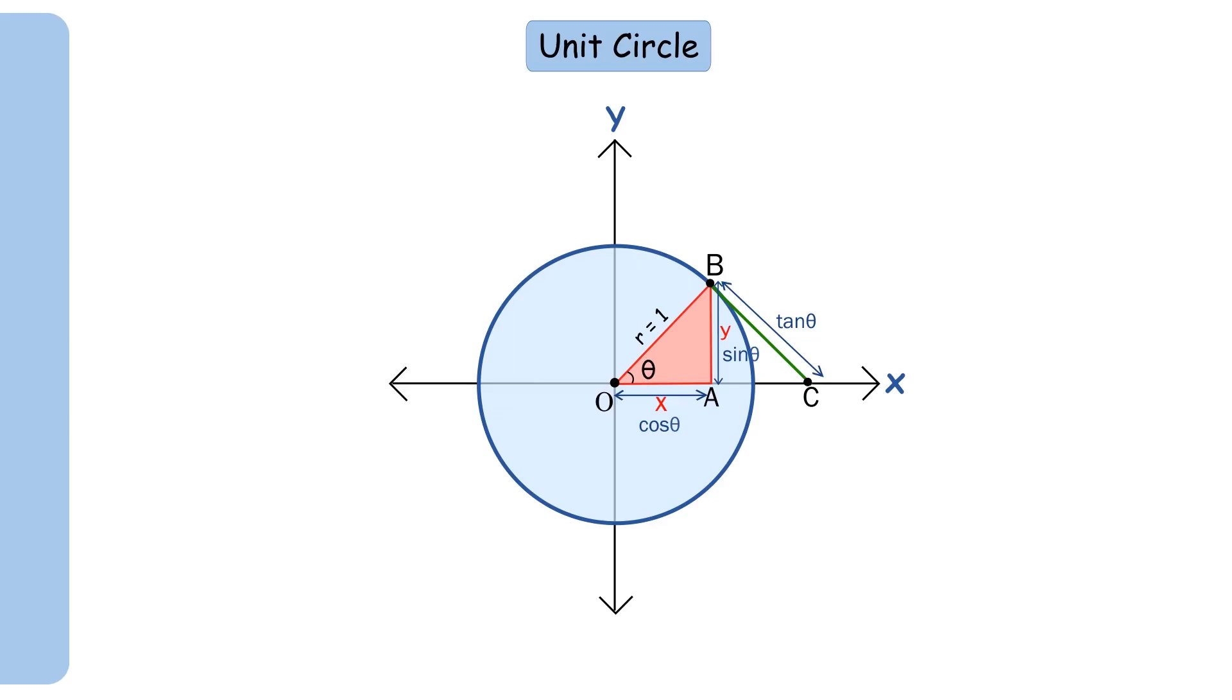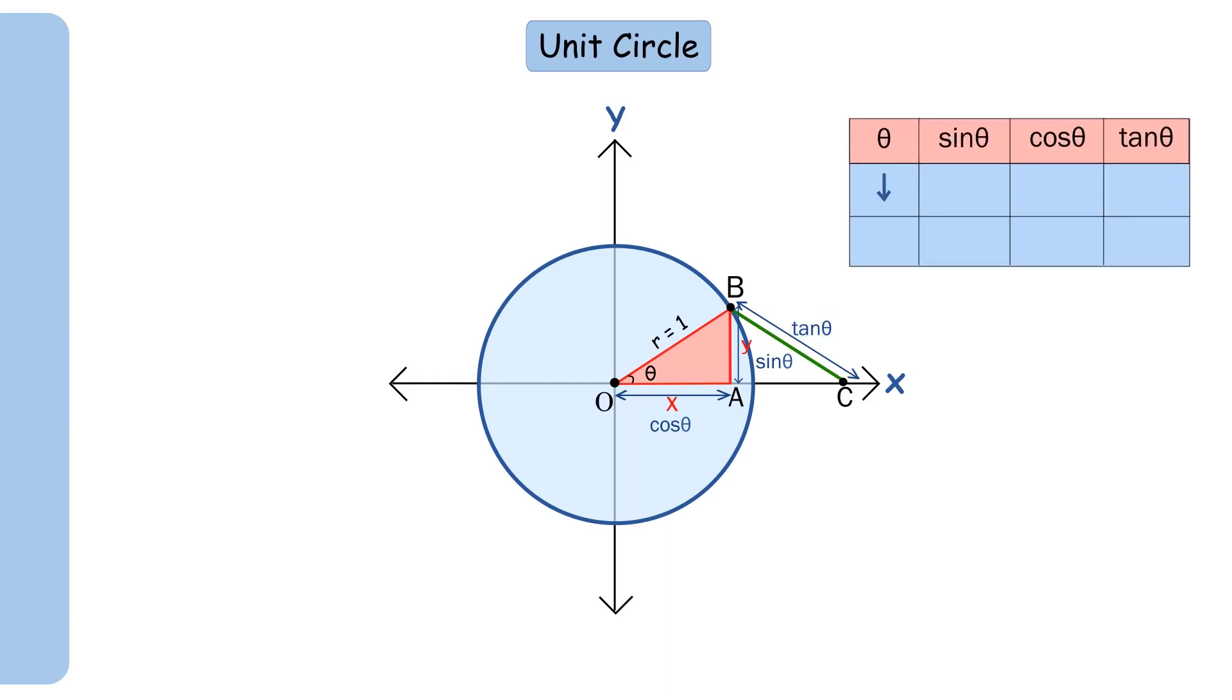When it moves towards right, the x-side gets longer, the y-side gets shorter, and the tangent also gets shorter. That means when theta decreases, cos theta increases and sin theta and tan theta decrease.